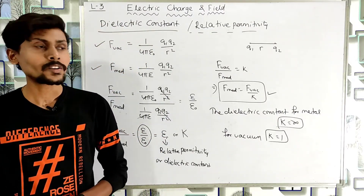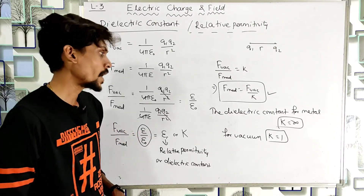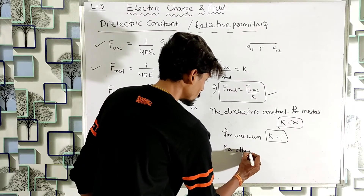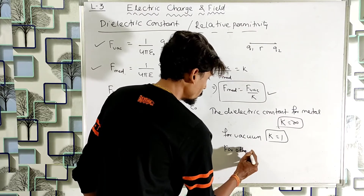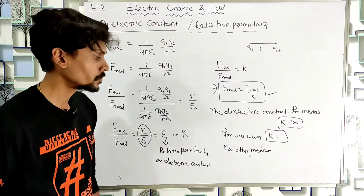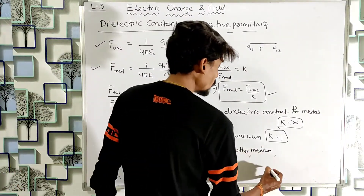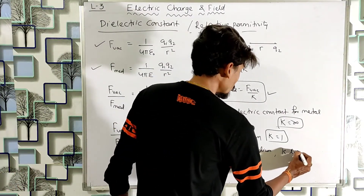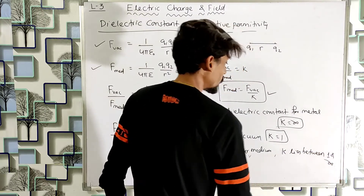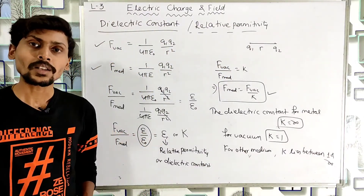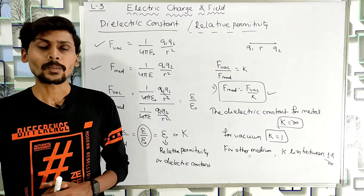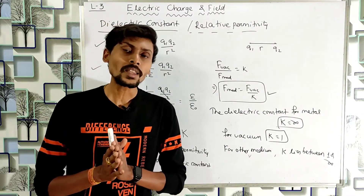For metals the dielectric constant is infinite, for vacuum K = 1, and for other media (except metals and vacuum) the value of K lies between 1 and infinity. For any non-vacuum medium, K is greater than 1.